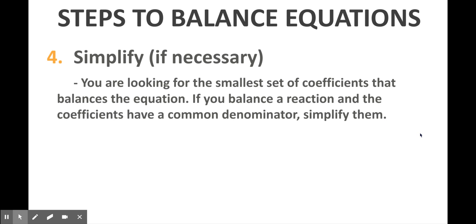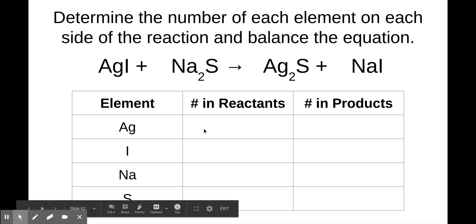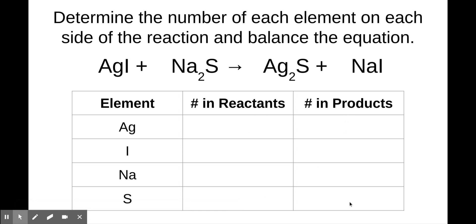So those are the steps to balancing equations, and you're probably thinking that doesn't make any sense without an example. Well, here's an example and we'll walk through it together. Here's our chemical equation — it is not balanced yet. Here's the t-chart: you list out all the elements involved in the reaction, then make a column for how many are in the reactants and how many are in the products.